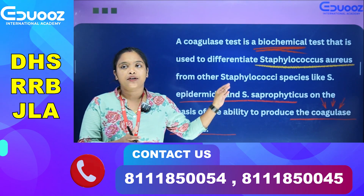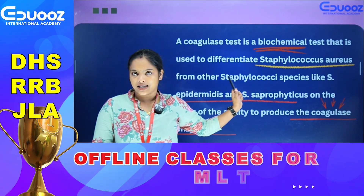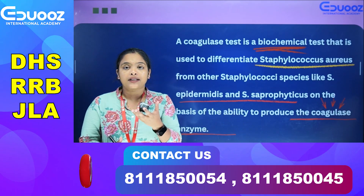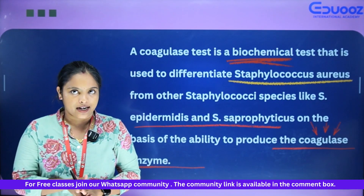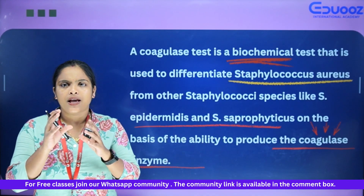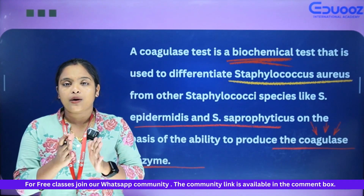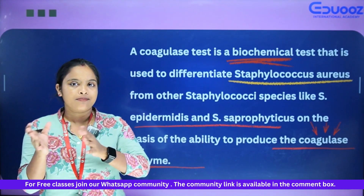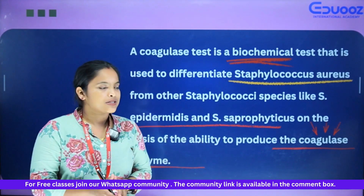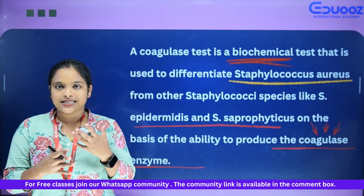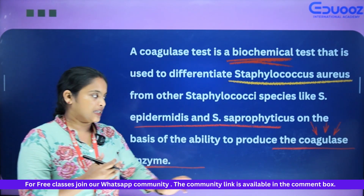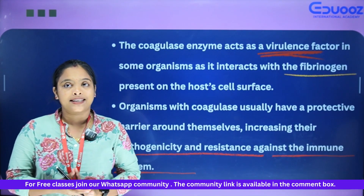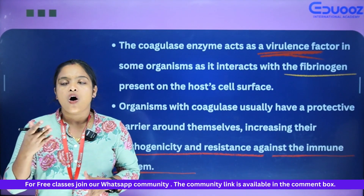We differentiate Staphylococcus aureus from other Staphylococcus species using the coagulase test. Coagulase is a virulence factor. It acts as it interacts with the fibrinogen present on the host cell surface.